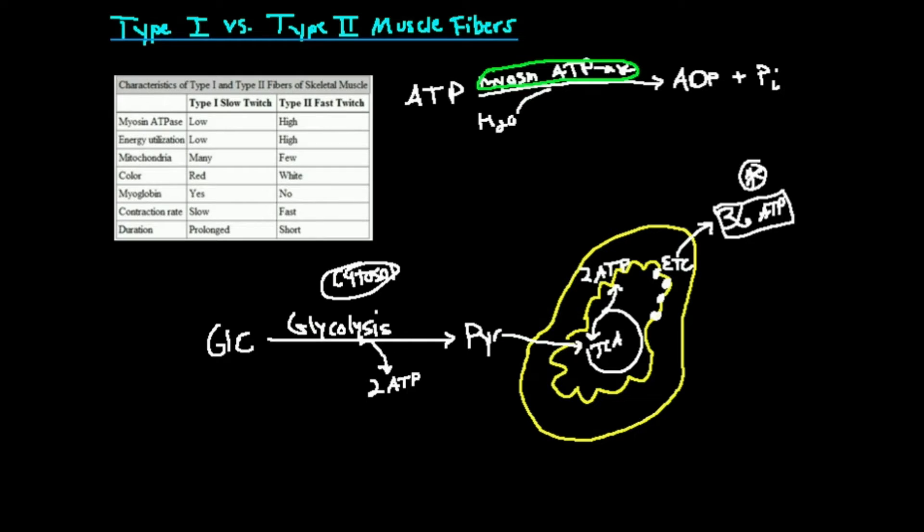Combine two things. Type 2 muscle fibers produce less ATP by this fewer mitochondria. But because of more myosin, they consume more per unit time. So they're consuming more ATP in one second, and they're producing fewer ATP in that one second. So they're going to run out of ATP a lot more quickly. Therefore, they fatigue faster. They fatigue faster. Type 2 fibers are considered fast fatiguing.